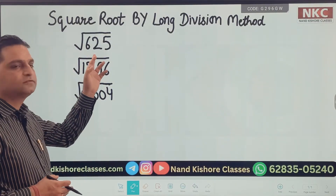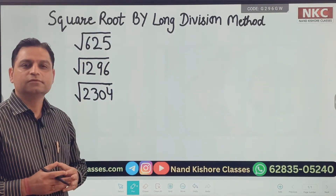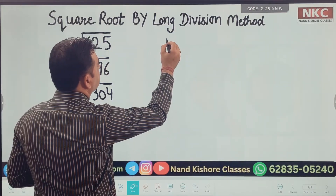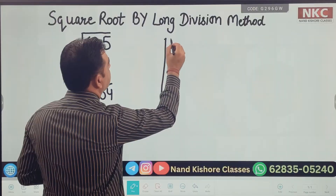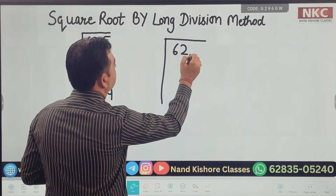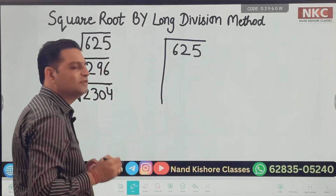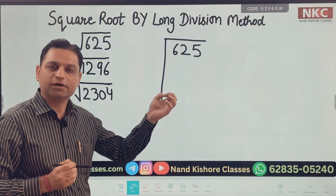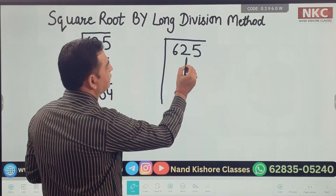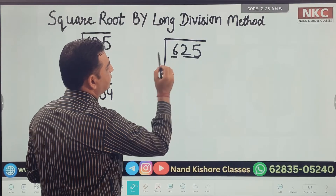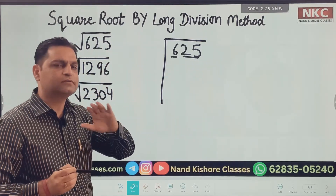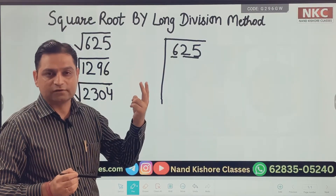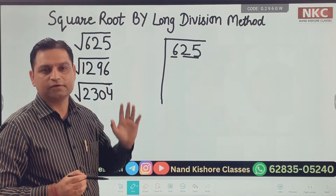We are going to start the first question, finding square root of 625. Let's suppose you want to find square root of 625. The first step should be to start making pairs from the end, like 25 and 6. No doubt 6 is alone, that's not a problem. But we have got 2 pairs now: one is 6 and one is 25.